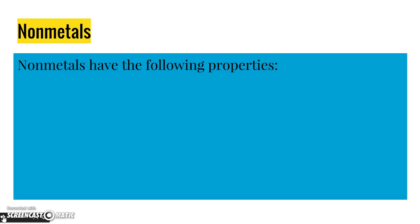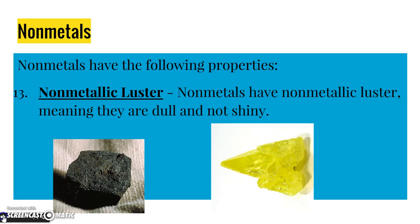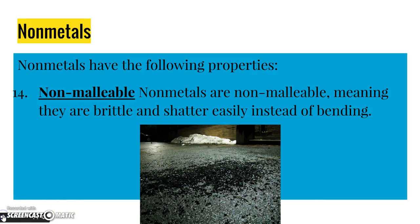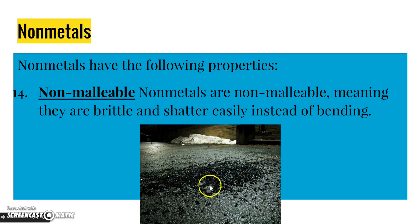Now let's talk about non-metals. Non-metals are elements that have the following properties. Non-metal elements have non-metallic luster, meaning they're dull and not shiny. These are two examples of some non-metal elements — see how they're kind of dull, definitely not shiny. This one looks like it may have a little bit of a glassy luster, but it's not metallic at all.